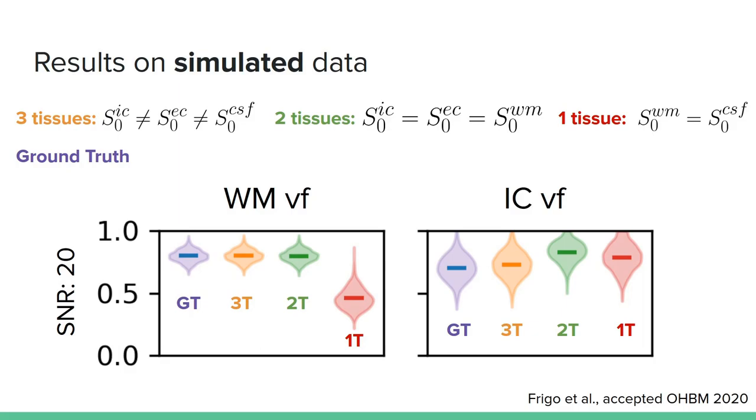The plots show the distribution of the white matter volume fraction and the intracellular volume fractions in the ground-truth data and for each used model. A good model is supposed to give a distribution which is similar to the one of the ground-truth, which is reported in violet. What we observe is that the white matter volume fraction is correctly recovered both with the three-tissue model and the two-tissue model. On the contrary, the intracellular volume fraction estimation is not biased only if we use the three-tissue model.